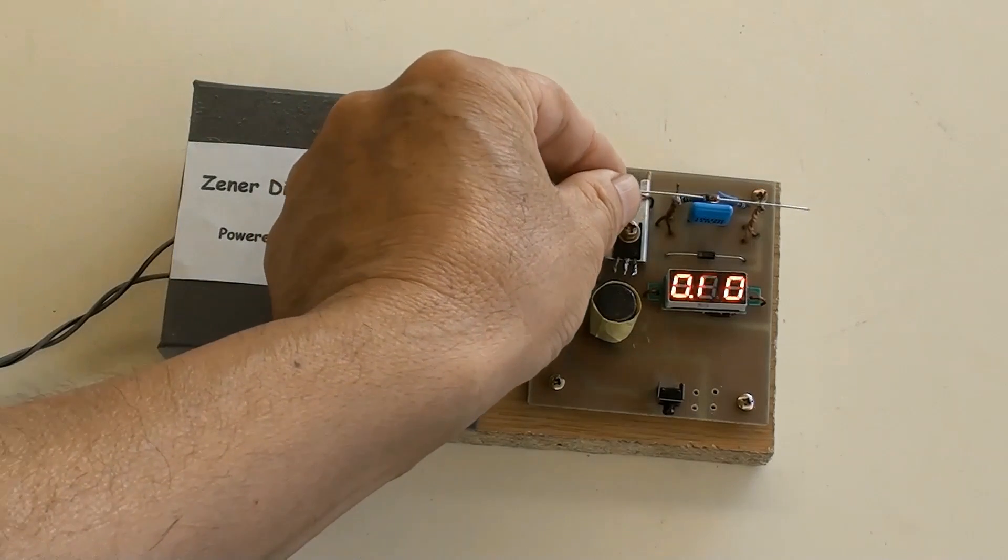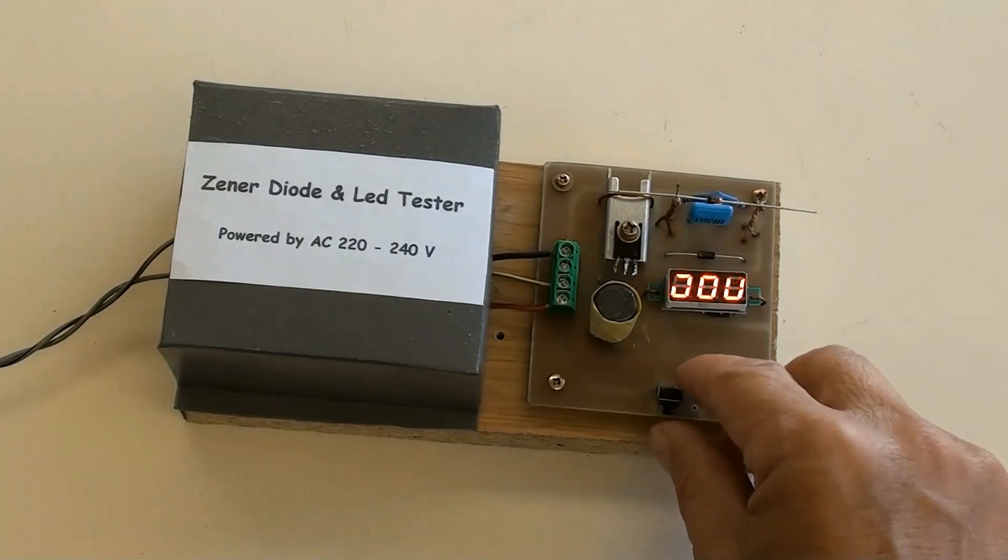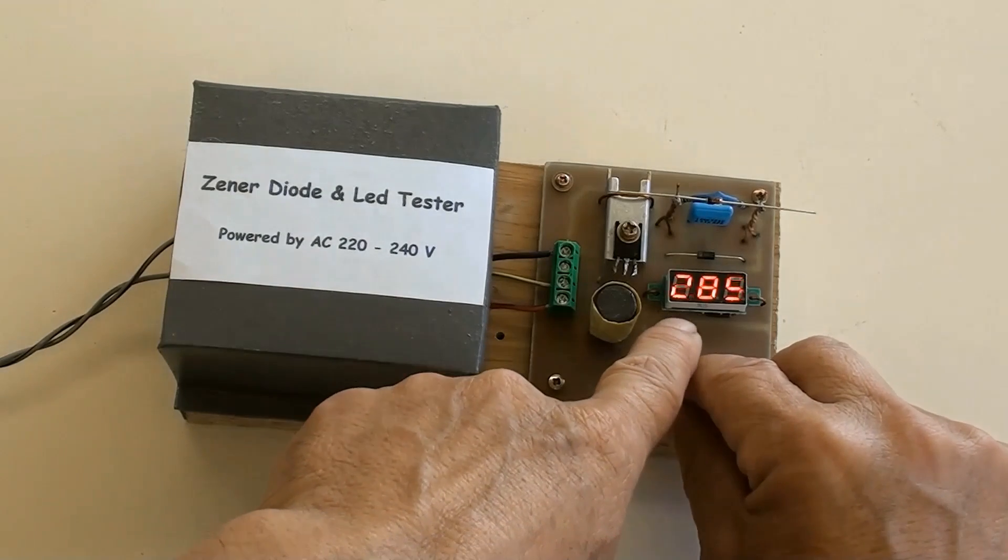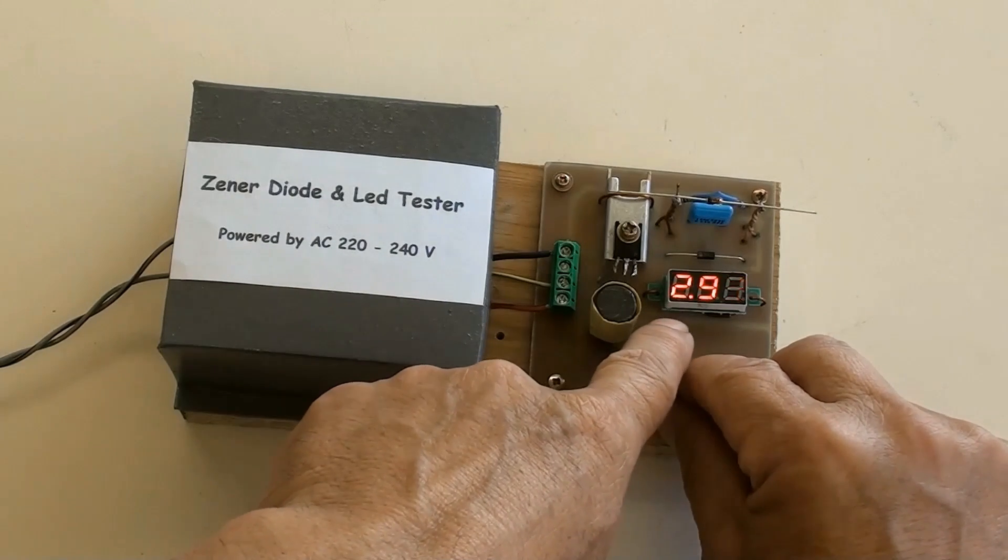Testing this one. The mini meter showed a voltage value of 2.92 volt. So this is 3 volt Zener diode.